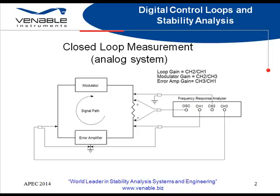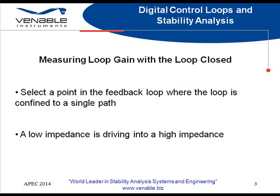The closed-loop setup has some considerations to be taken into account. We have to select a point in the feedback loop where the loop is confined to a single path, to provide us our signal injection point. Typically, this point will also be used to measure our total feedback loop. Also, we want this point to be in a spot where you have a low impedance feeding into a high impedance in the feedback loop. This will typically be at the point where the output of the power stage feeds into the error amplifier.